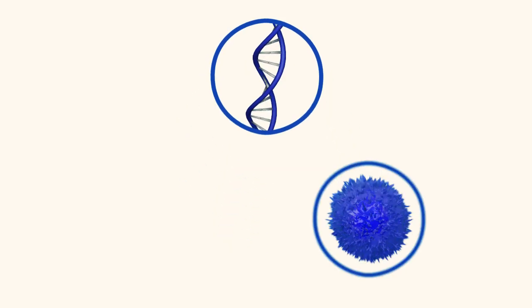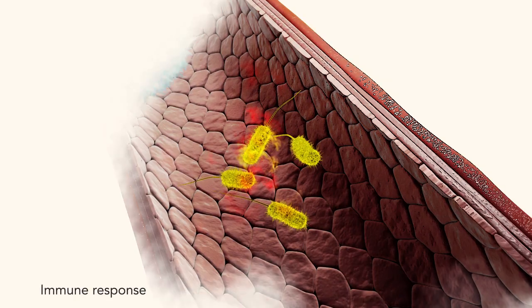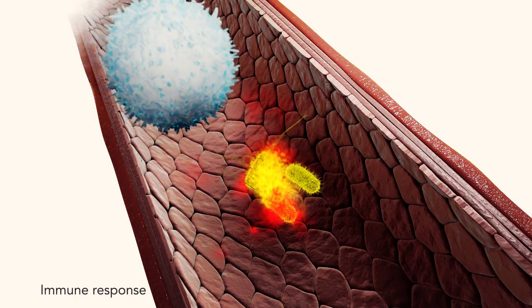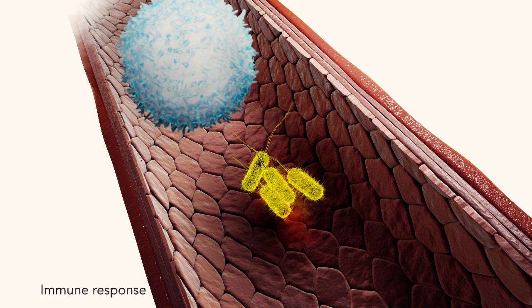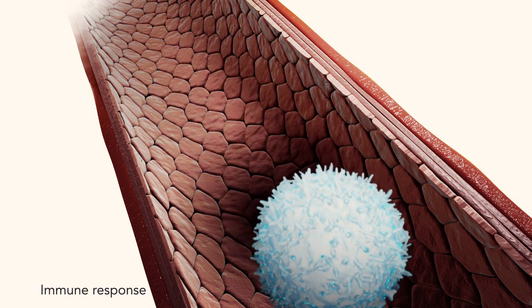Although no one knows what causes Crohn's disease, researchers think it is likely an interaction between your genes, your immune system, and something in the environment. Your immune system usually protects you from foreign invaders, such as viruses and other organisms, that make their way into your body by launching an attack called an immune response.